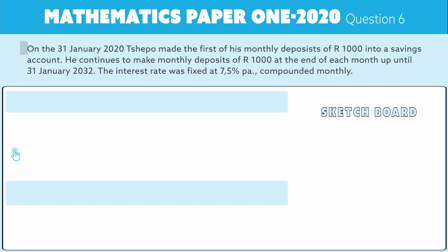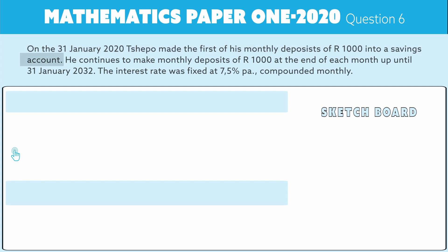On the 31st of January 2020, Tsepo made his first of his monthly deposits of 1000 rand into a savings account. There are three important things there: when it starts, the periods when he's going to pay, and the amount that he pays. He continues to make these monthly deposits of a thousand rand at the end of each month up to January 2032.